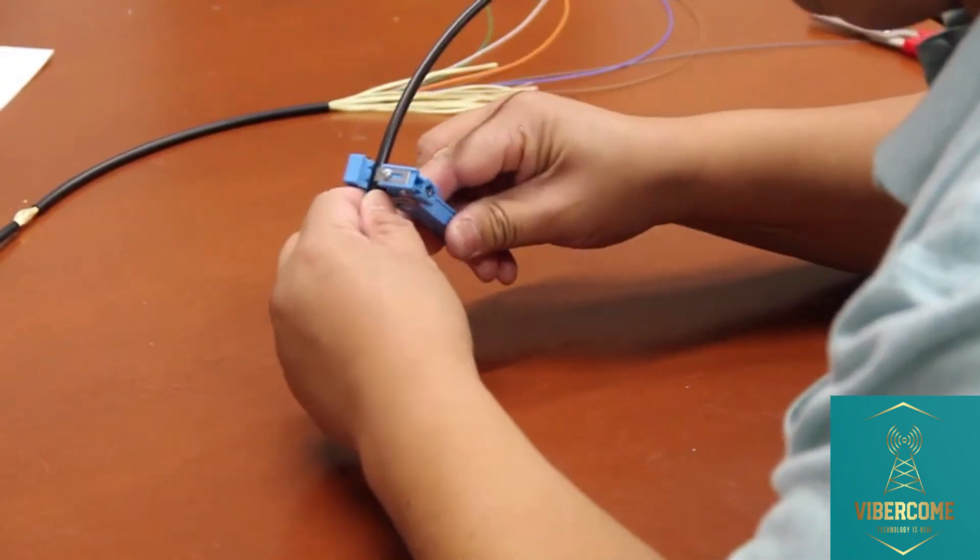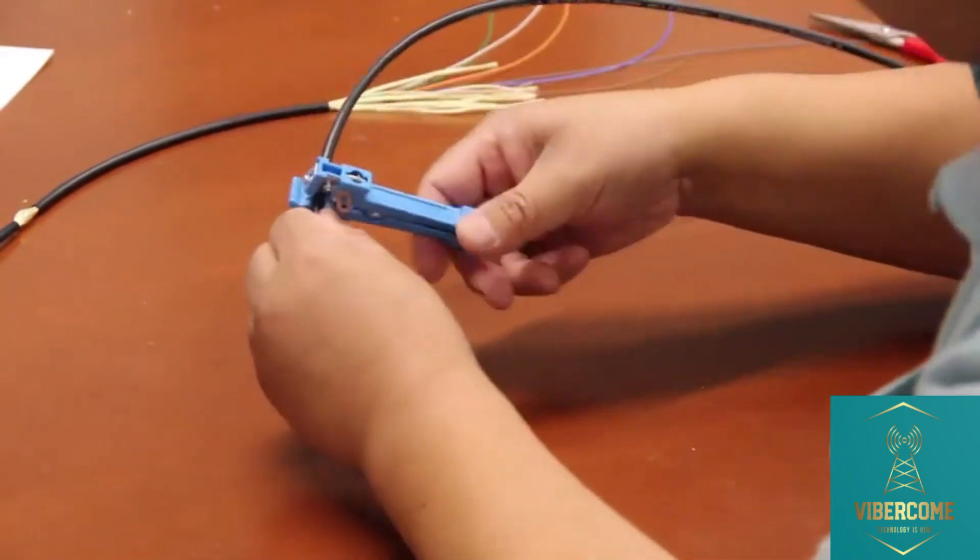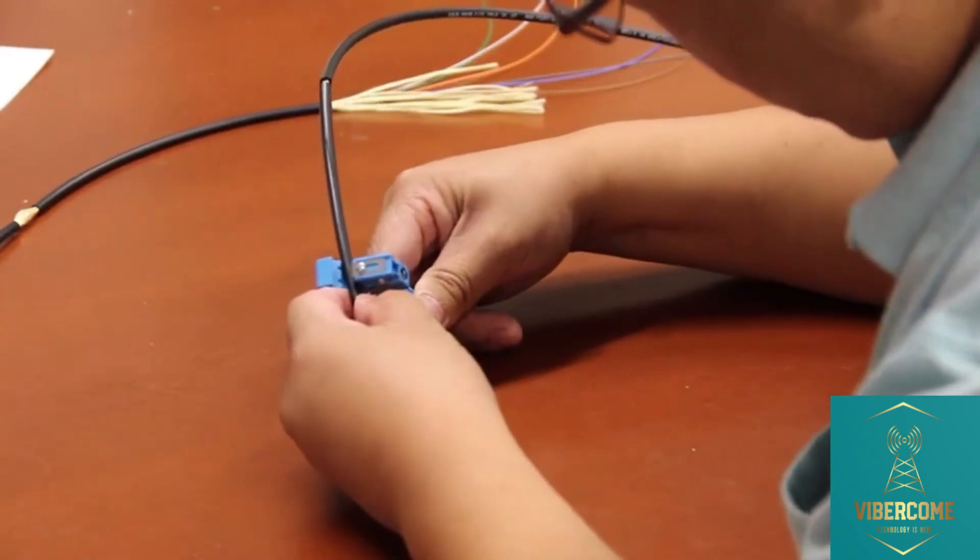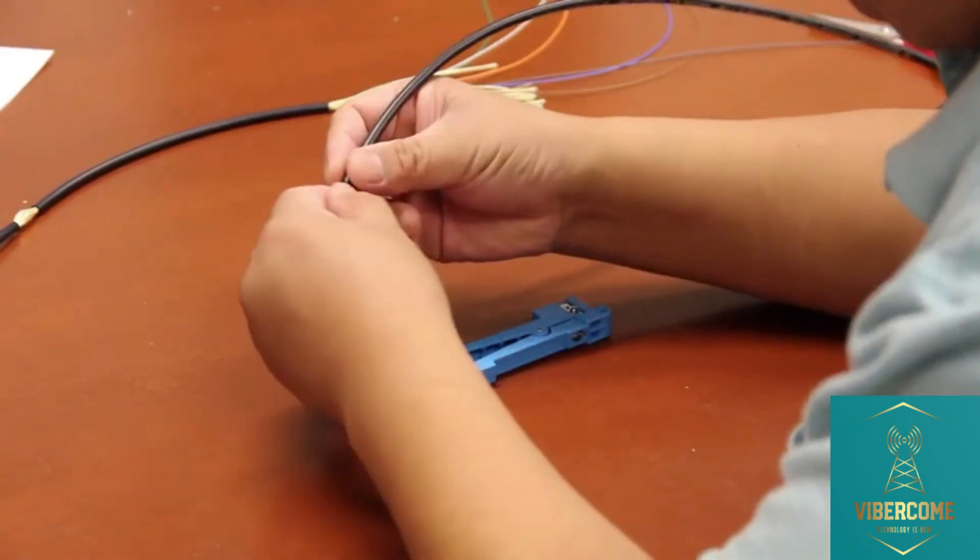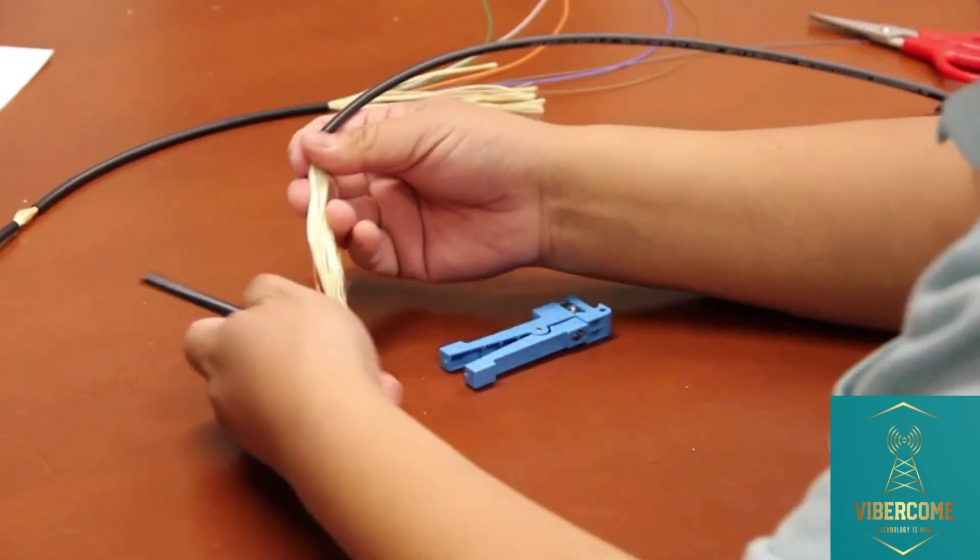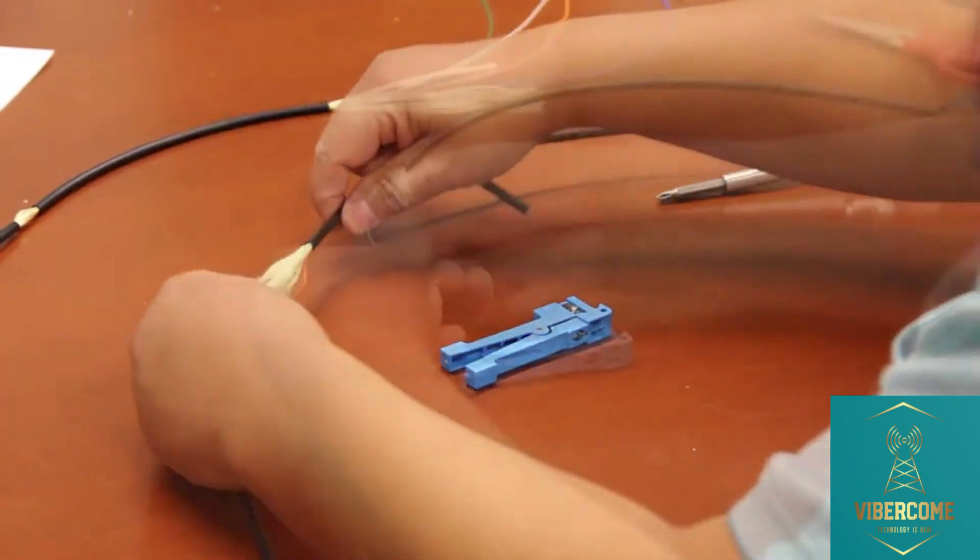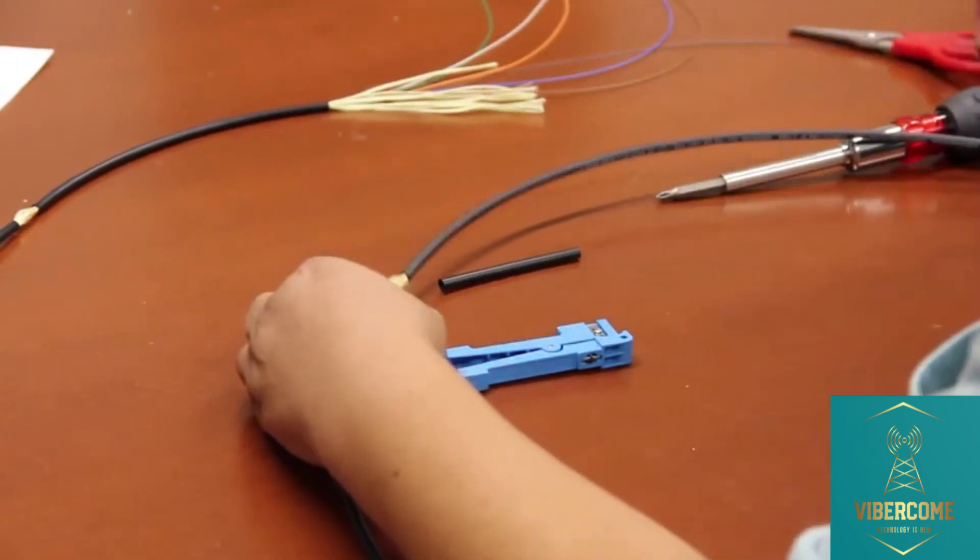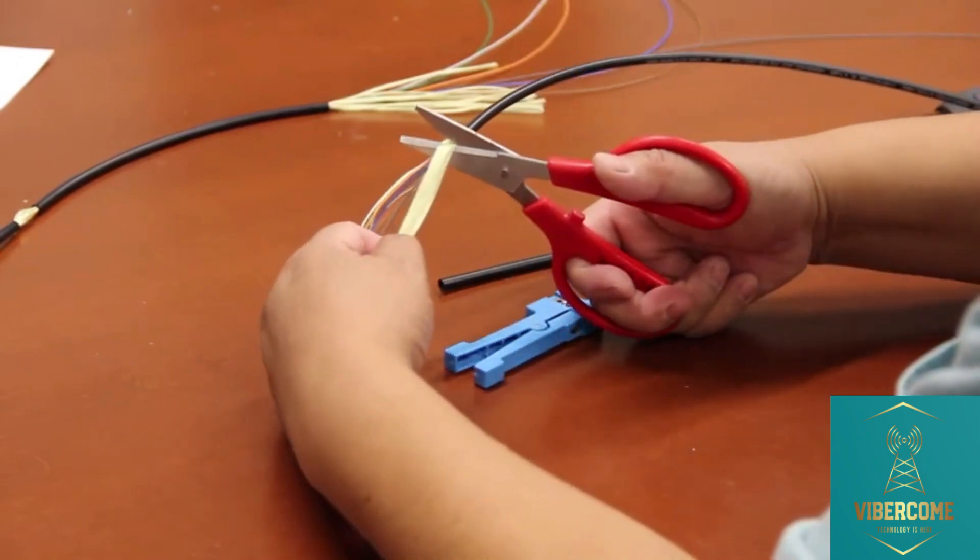Then put the buffer tube into the ring cut notch. Do the first ring cut and then the second ring cut. Now we can remove this section of the buffer tube and have a mid-axis window on this cable. Now let's remove the Kevlar fiber strength member and we'll have full access to the fibers inside.